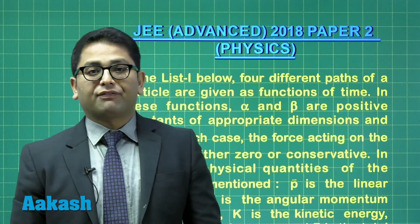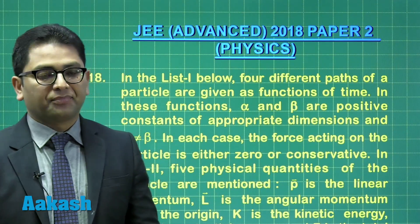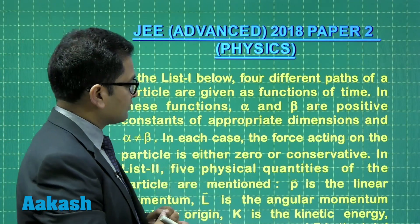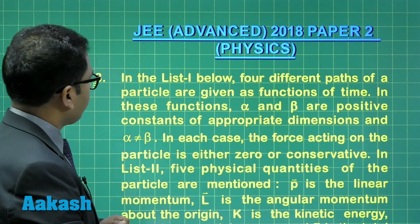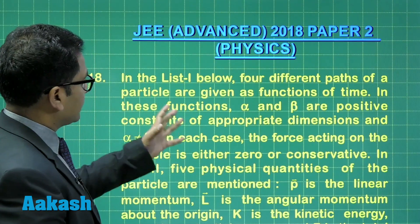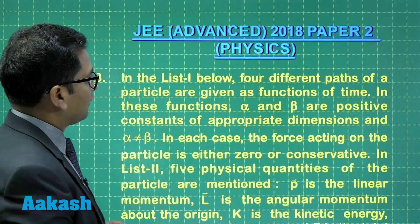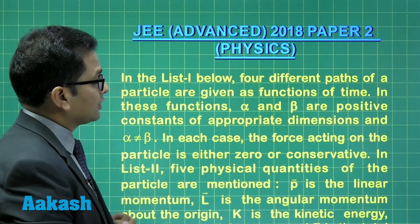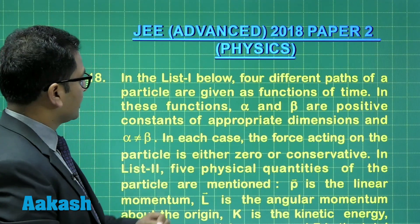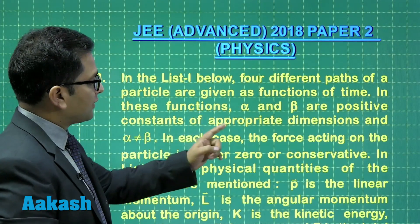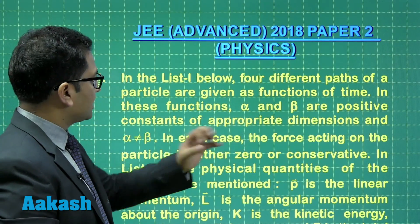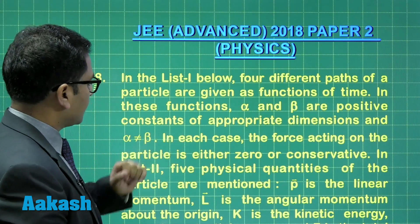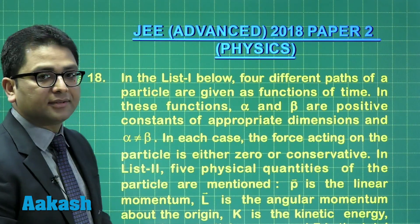Question number 18, the final question, has good substance within it. It says in list one below, four different parts of a particle are given as a function of time. In these four functions, alpha and beta are positive constants, and alpha is not equal to beta.